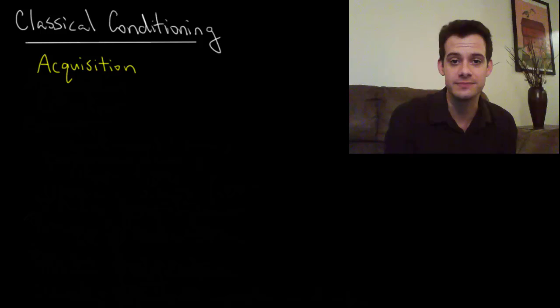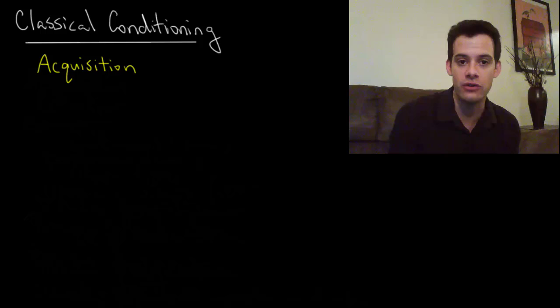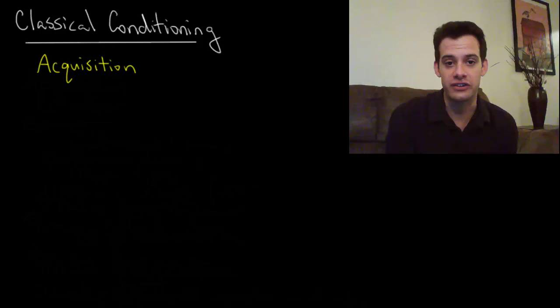In the previous video we saw the basic steps in classical conditioning. This shows how we take a neutral stimulus that doesn't cause a particular response, and then by repeatedly pairing it with an unconditioned stimulus that causes an unconditioned response, we can turn that neutral stimulus into a conditioned stimulus which now evokes a conditioned response. This process of learning this association between the previously neutral stimulus and the unconditioned stimulus is called acquisition.